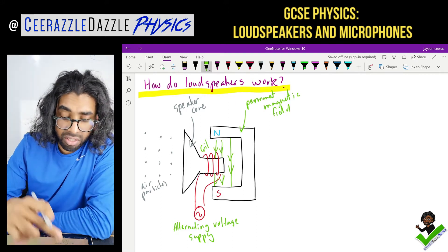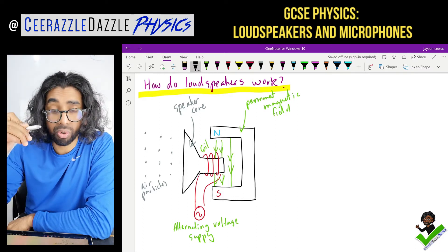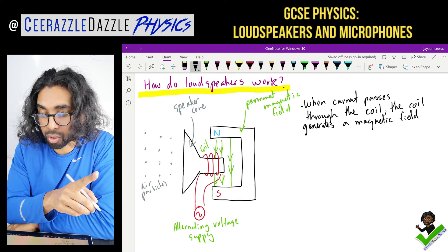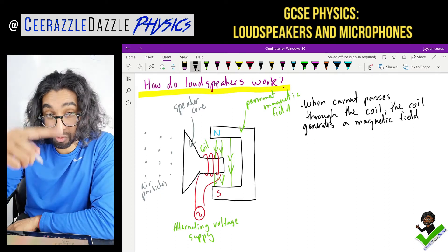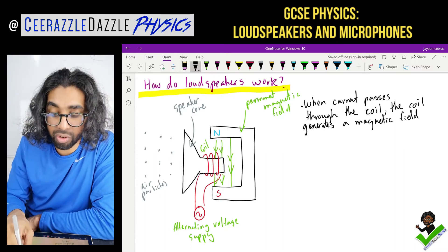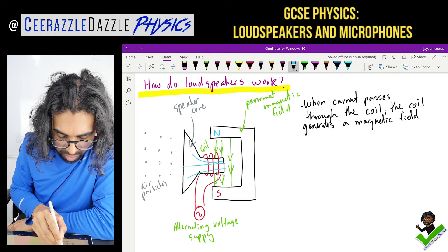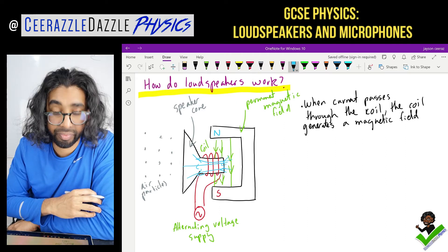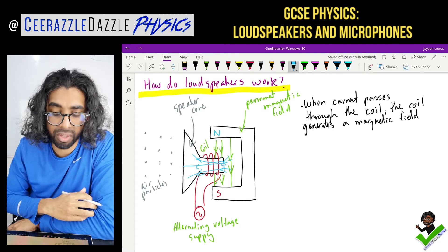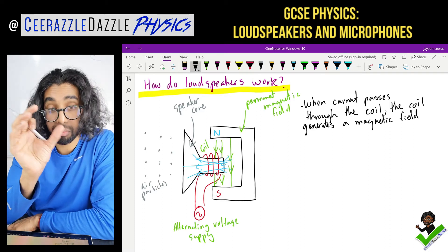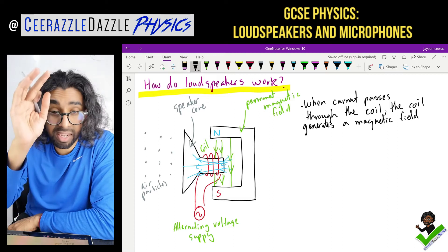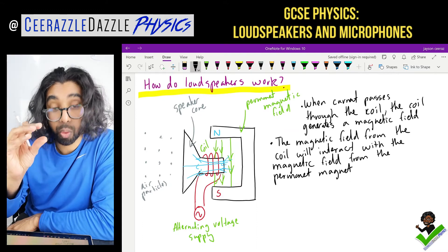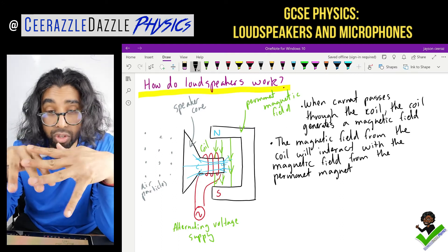Now we're going to pass current through that red coil. When current passes through the coil, the coil generates its own magnetic field — I'll draw it now in blue. So from my previous videos, we now have a magnetic field being created because of the coil. But there's a problem: that magnetic field from the coil is going to interact with the magnetic field from the permanent magnet. So you've got two fields interacting now.